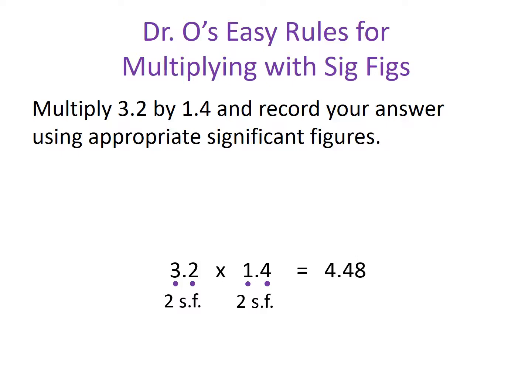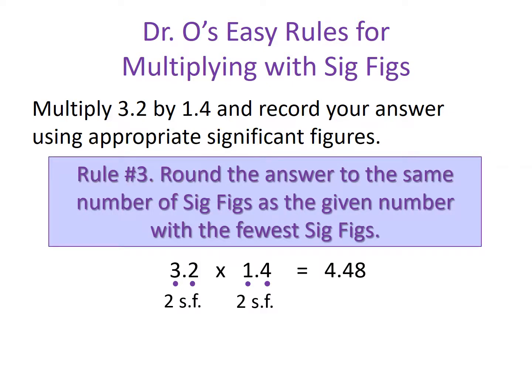Rule number three says to round our answer to the same number of significant figures as the given number with the fewest significant figures. Since both of our given values have two significant figures, we round to two significant figures. Our answer of 4.48 has three significant figures, so we round to 4.5, which like our given values has two significant figures. We have successfully applied the rules for multiplication with significant figures.